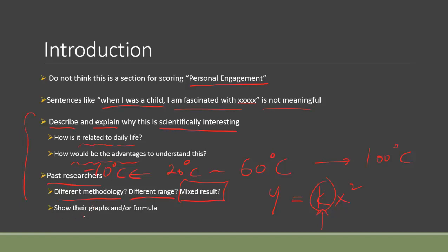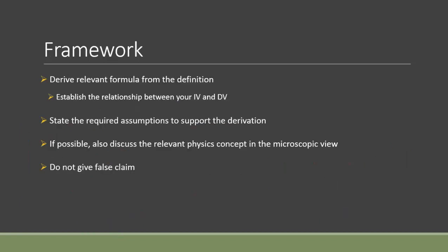You can show researchers' findings more directly by including their graphs — whatever independent and dependent variables they used, the graph shows the relationship directly, whether it's linear, a curve, or another trend. If you can't find a graph, use their data table to plot one yourself. Worst case, if you have no data, at least find the formula they suggest in their research paper.